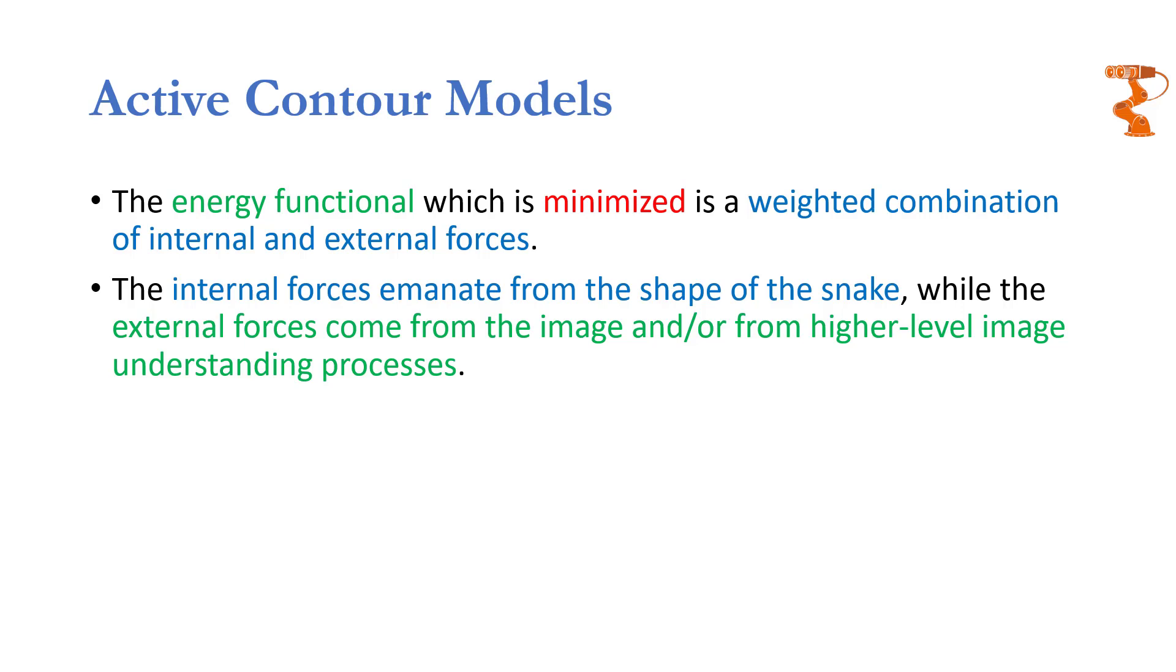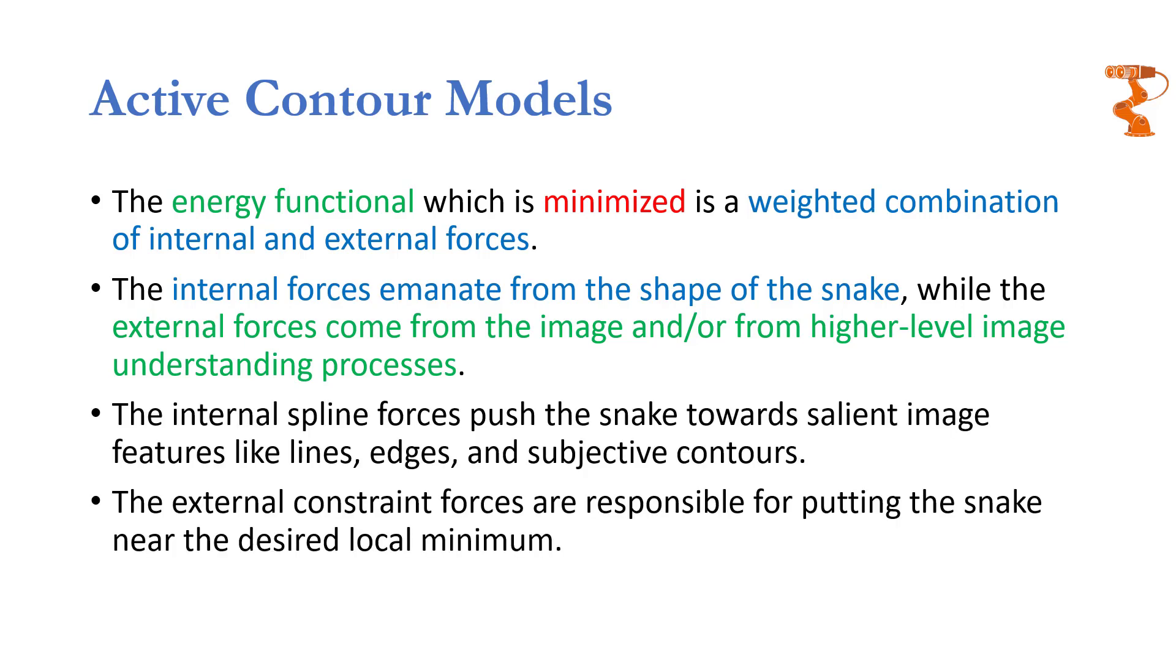Whereas the external forces will come from the image or some higher level image understanding processes, for example the interaction with the user. That is a higher level image understanding process. The user understands the image, so it will place the snake near the desired local minima. But the user cannot place the snake exactly at the desired local minima. If you can relate this sentence with the example of the robot which I gave you in the last slide, that is you want to select this robot, then you can place the snake somewhere near it but you cannot place it exactly.